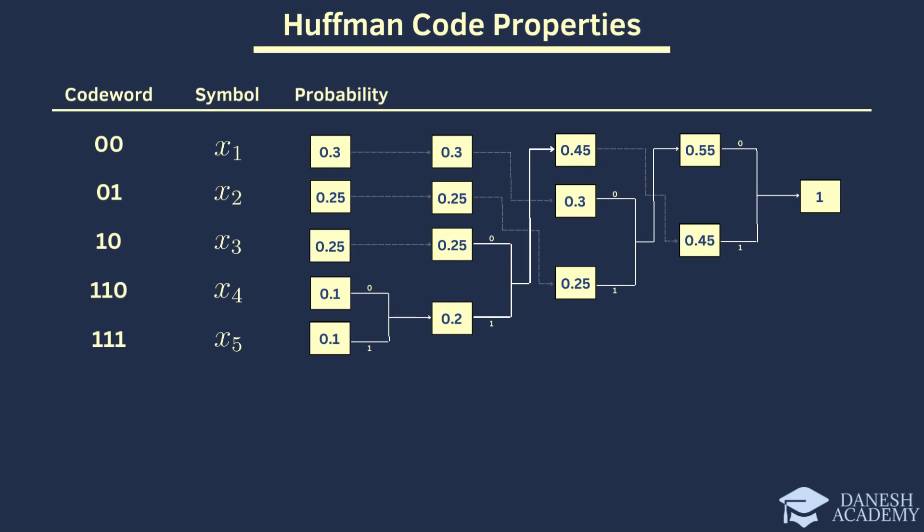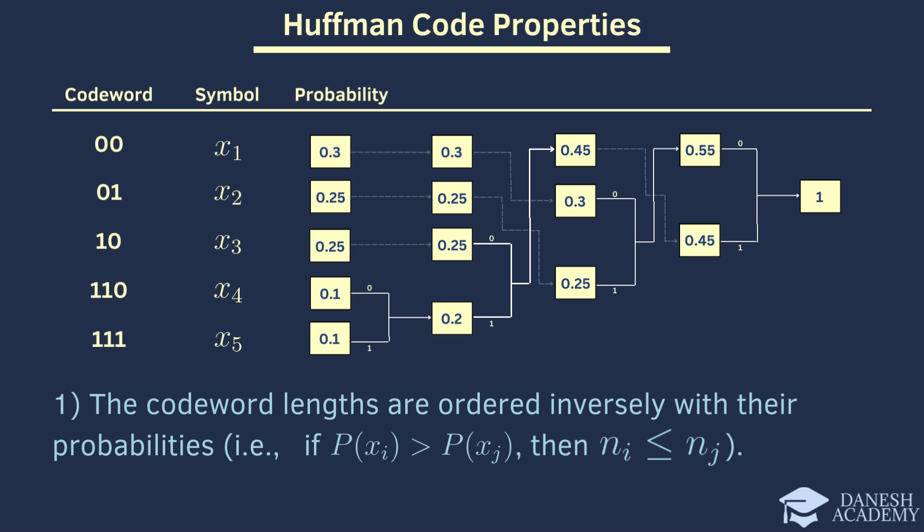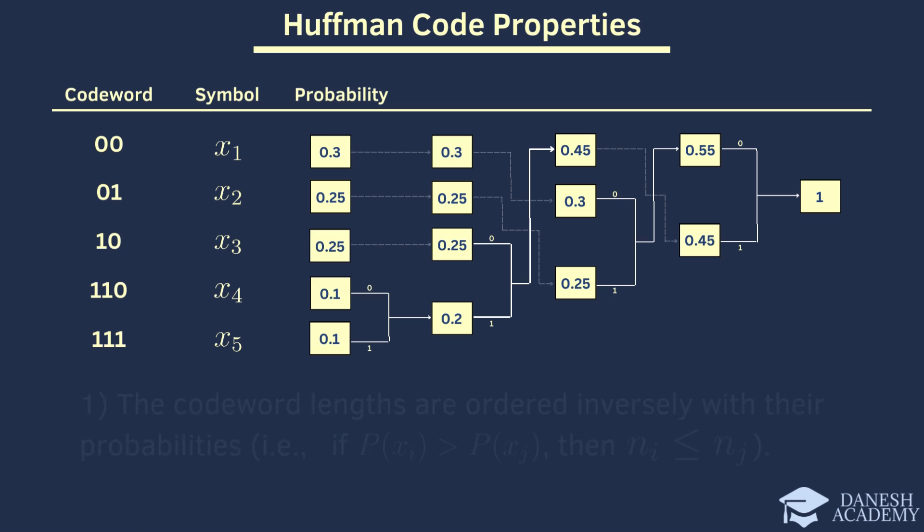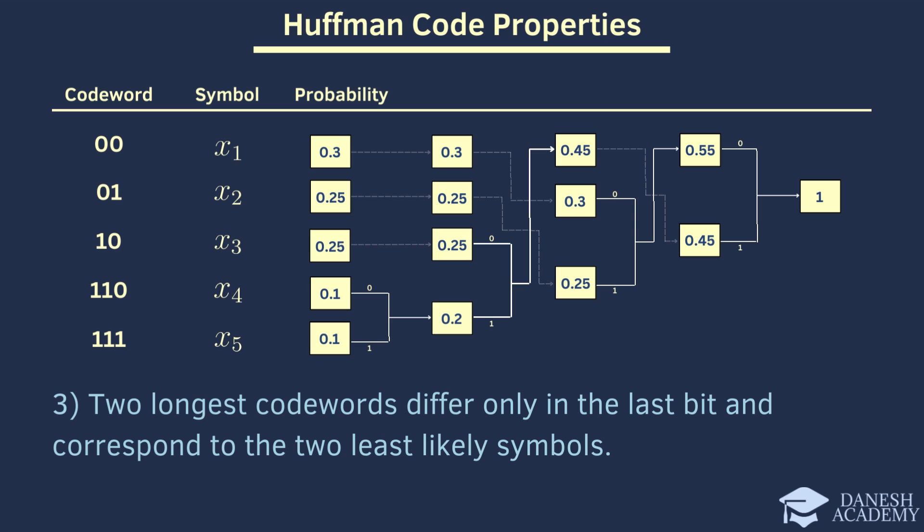Here we have an overview of the Huffman code tree with symbols and probabilities. Now, let's discuss the properties of Huffman code. The first property is that codeword lengths are inversely ordered with their probabilities. For example, here symbol X1 has a higher probability than symbol X4, so the codeword length of X1 is equal to or less than X4. The second property is that the two longest codewords have the same length. For example, in this case, both 110 and 111 have a length of 3. Lastly, the two longest codewords differ only in the last bit and correspond to the two least likely symbols. As you can see, 110 and 111 differ only in their last bit.